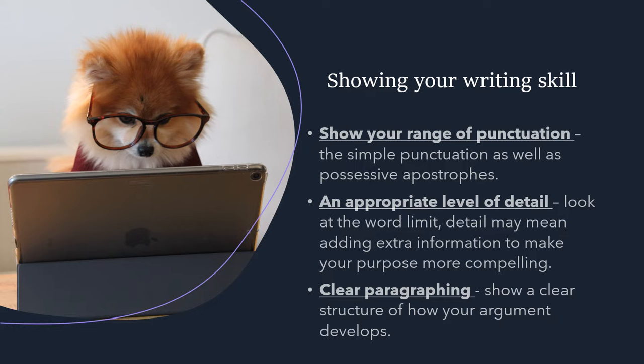For an appropriate level of detail, try to paint a picture of your experiences by using adjectives - those all-important describing words. For example, if complaining about a bad meal, provide the details of what it was like to taste it. For clear paragraphing, whenever you move on to a different topic, make sure you show this by changing paragraph - that way you're showing a nice level of writing skill.